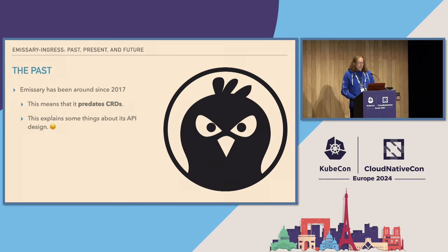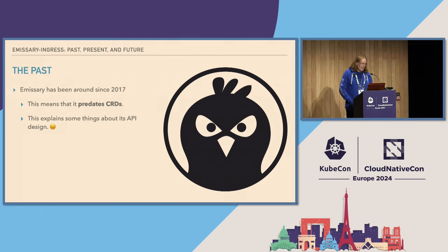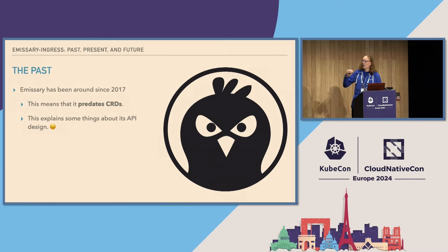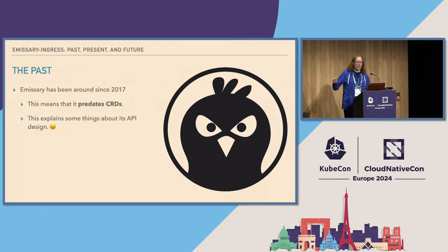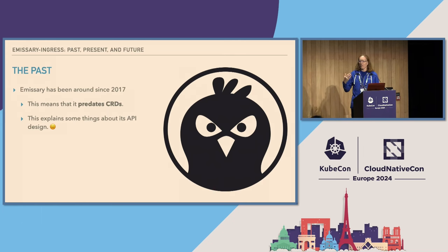Emissary has also been around since 2017. For those paying attention to Kubernetes, this means that Emissary predates the concept of custom resources. Emissary came along right at the point that third-party resources were deprecated, but before CRDs were standardized. So some of the things about the way the input language was designed reflect that — sometimes in good ways and some in less good ways.